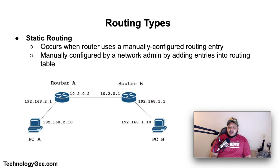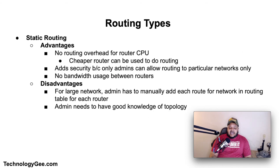Let's talk about some routing types. The first is static routing. Static routing is a form of routing that occurs when a router uses a manually configured routing entry rather than information from dynamic routing traffic. In many cases, static routes are manually configured by a network administrator by adding entries into a routing table. Some advantages of static routing include no routing overhead for router CPU — meaning a cheaper router can be used — and added security because only administrators can allow routing to particular networks.